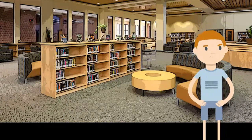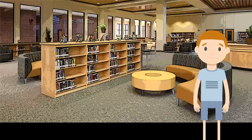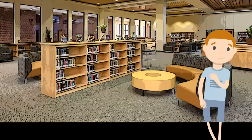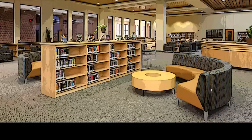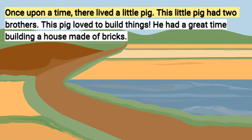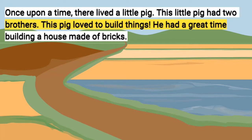Let's read a story together. After I read the story, let's see if we can identify the character, how the character is feeling, and what actions the character is doing. Once upon a time, there lived a little pig. This little pig had two brothers. This pig loved to build things — he had a great time building a house made out of bricks.